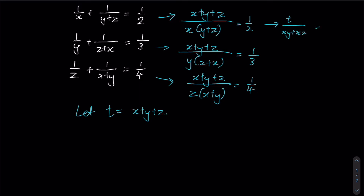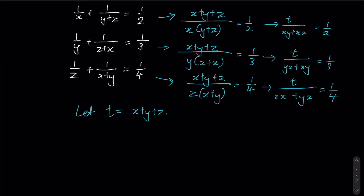So now this becomes t over (xy + xz) equals one half, and t over (yz + xy) equals one quarter. We can then start to cross-multiply each of them, giving us three new equations.